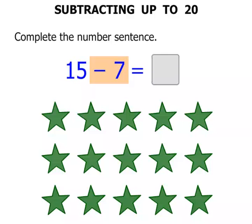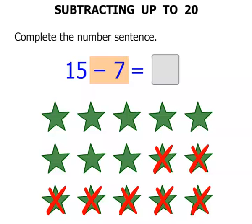We're subtracting 7. Let's cross them out. 1, 2, 3, 4, 5, 6, 7. So we've crossed out 7.